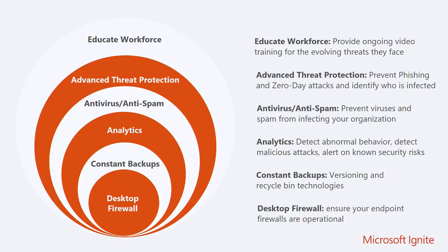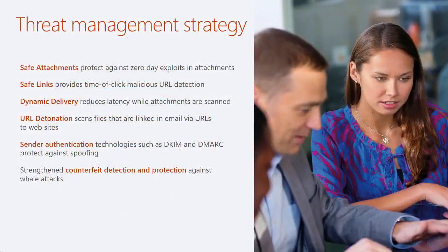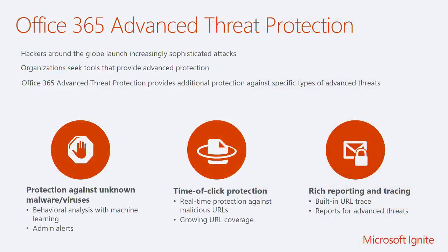Our threat management strategy falls into these categories. The bottom two are the Exchange Online Protection piece, which we're not talking about today. The first four are capabilities that advanced threat protection deals with. ATP gives you time-of-click protection against URLs and protection against malware through machine learning and analytics on files - we're not relying on a signature, we're looking at the behavior when we run that file. And there's rich reporting so you know who's clicked on a link or received a file.